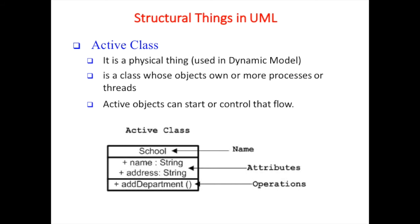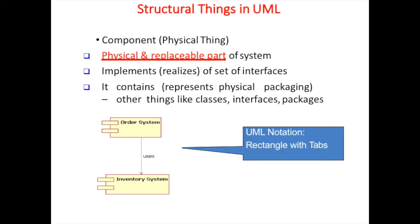The objects in an active class can start and control the process. Component is a physical and replaceable part of a system that implements or realizes a set of interfaces. It contains and represents physical packaging of other things like classes, interfaces, and packages, and is shown as a rectangle with tabs.